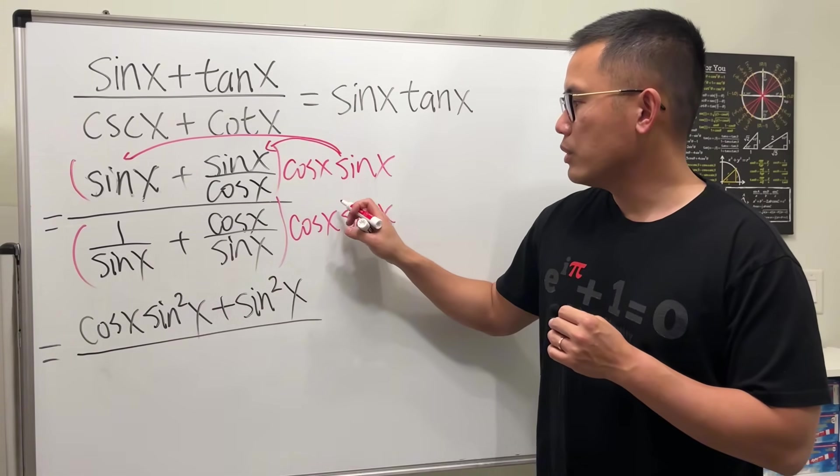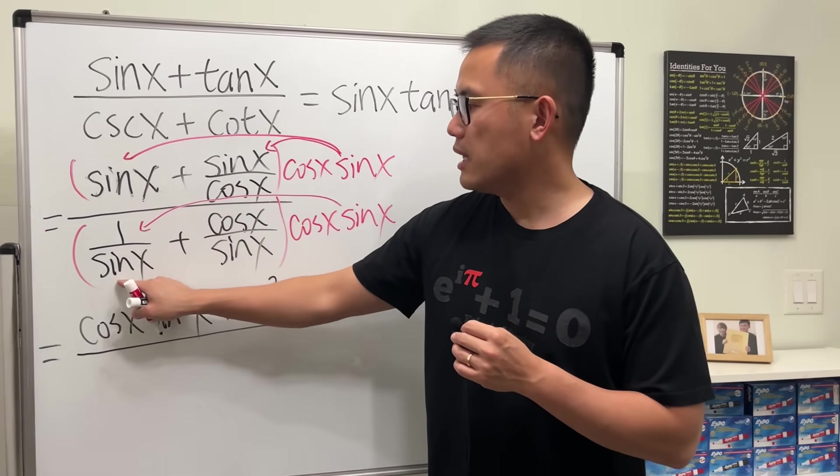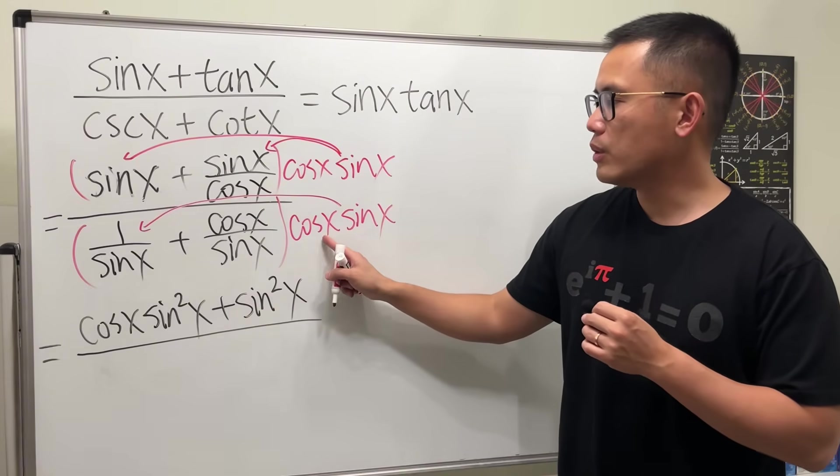And then continue. This time, take this and multiply with that. Sine x and sine x cancel, and cosine x times one is cosine x.